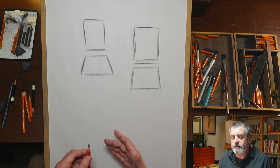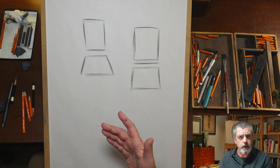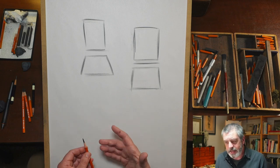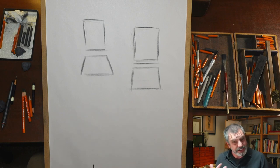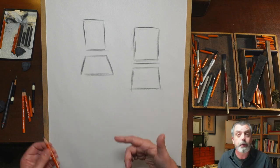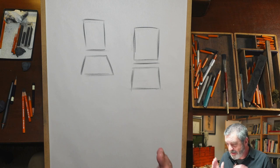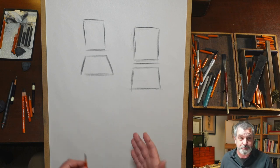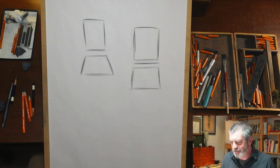I wish I could say there's a perfect formula to get the size relationships of these boxes right every time. The reality is, a lot of it comes down to repetition and intuition through repetition — through doing it wrong a lot. We learn more from our mistakes than we do from our successes.